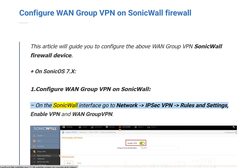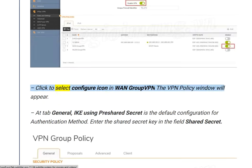On the SonicWall interface, go to Network > IPsec VPN > Rules and Settings. Enable VPN and WAN Group VPN. Click the Configure icon in WAN Group VPN — the VPN Policy window will appear.